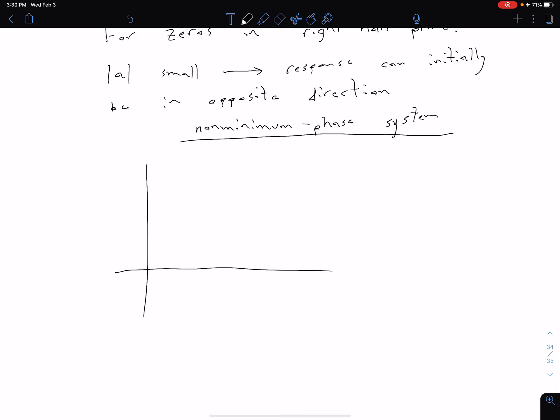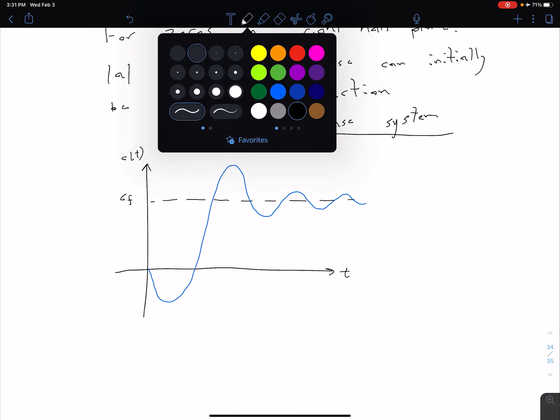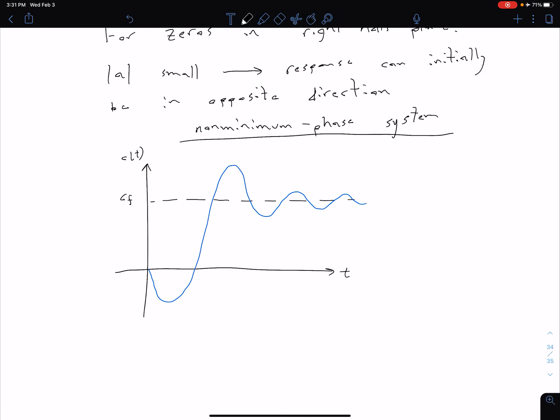And so what that looks like graphically, if we have our C(t) over time, so we have an underdamped response, we're going to have some final value that we're shooting for, C_f. And so before what we said is we have something that goes like this. Well, what we're saying now is that for a non-minimum phase system, initially we might actually be going in the opposite direction before coming back and seeing that characteristic underdamped response type. So that's something that we can see in certain cases when adding zeros.